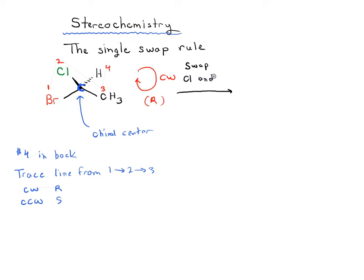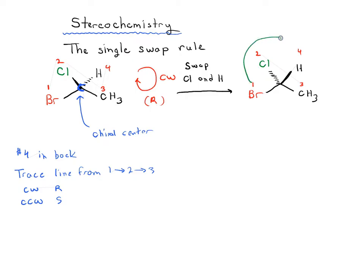Let's swap chlorine and H — this is not a chemical reaction, we're just doing this on paper. Imagine that if we were to switch two bonds, what would happen to R and S? So if we make our H a wedge and our chlorine a dash, we've got groups 1, 2, 3, and 4. When we trace a line from 1 to 2 to 3, it still goes clockwise as it did before.